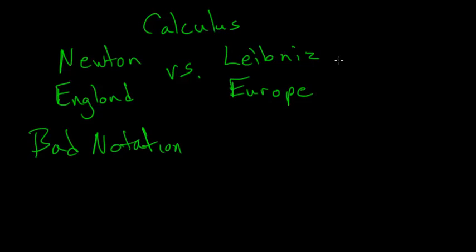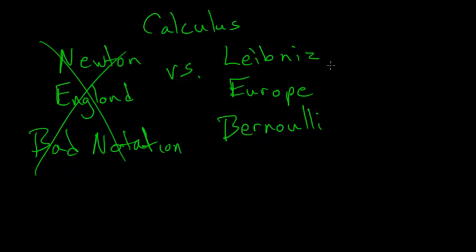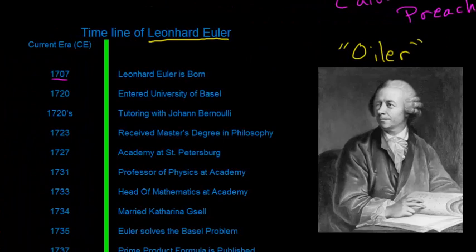It just so happened that Newton's notation was poor compared to Leibniz's — bad notation. Today we actually use Leibniz's notation. So England fell behind a hundred years or so, and calculus in Europe took off. It was the Bernoulli brothers, Johann and Jacob, that worked with Leibniz. The Bernoullis worked on the first calculus textbook ever written — they actually helped the author prepare the textbook. These were the smartest men in the world at the time, and arguably some of the smartest mathematicians of all time. And it just so happens that Euler gets one of these brothers as his tutor.